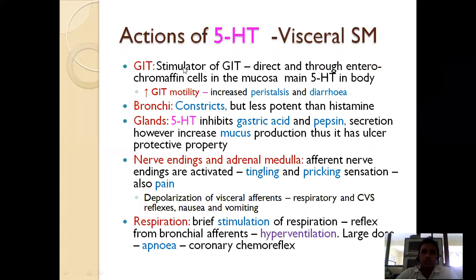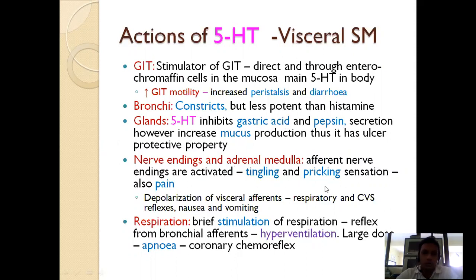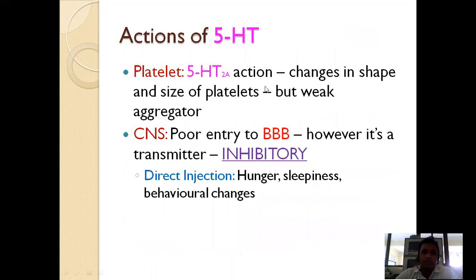On visceral smooth muscle, serotonin increases peristaltic movement and GI tract motility, causes constriction of bronchi, and inhibits gastric acid and pepsin secretion. It also produces tingling, pricking sensation, and pain. On respiration, it can cause stimulation and also apnea via the coronary chemoreceptor reflex. On platelets, it causes activation and aggregation.